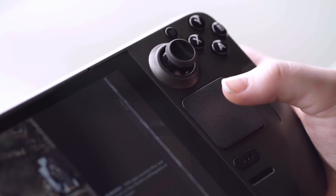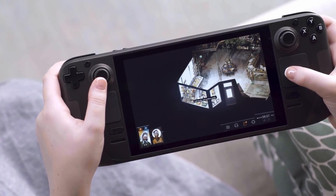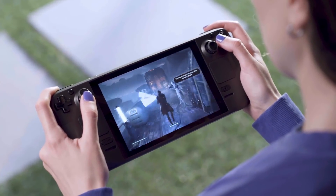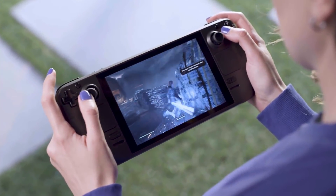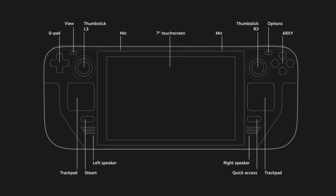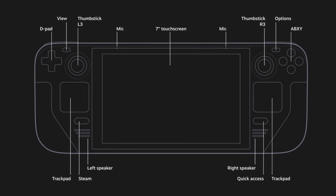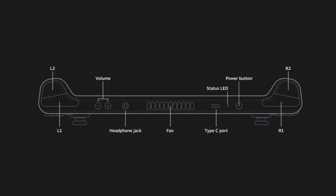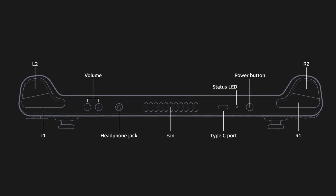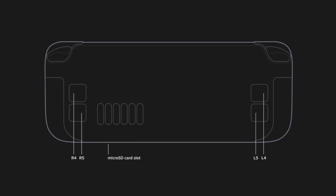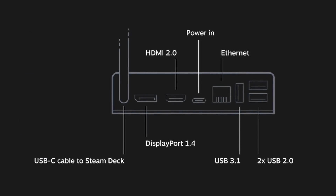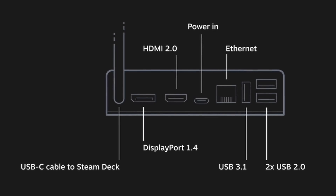In addition to two analog sticks, it also comes with two trackpads, one on each side. It seems like Valve has not abandoned the trackpad-on-controller idea they had with the original Steam Controller. The Steam Deck has Wi-Fi and Bluetooth 5.0 connectivity with support for controllers, accessories, and audio, as well as a 3.5mm stereo headset jack. It weighs approximately 669 grams, or 23.5 ounces. It has a microSD slot for more storage, and with a dock, it can connect to an external display using DisplayPort 1.4 or HDMI 2.0.